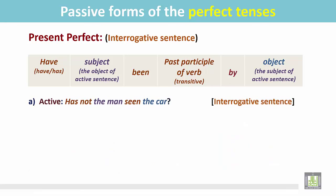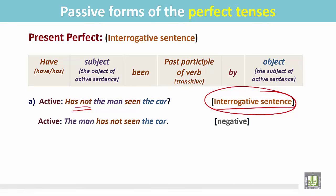Another example. 'Has not the man seen the car?' This is an interrogative sentence in the negative. Change this interrogative sentence into a statement. And this is the statement: 'The man has not seen the car.'